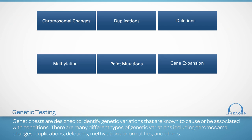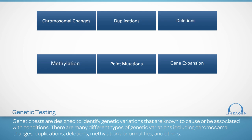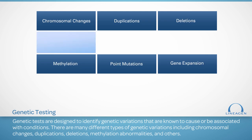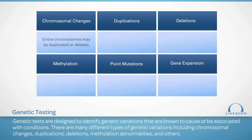There are many different types of genetic variations, including chromosomal changes, duplications, deletions, methylation abnormalities, and others. Chromosomal changes occur when an entire chromosome is duplicated or deleted — in other words, there is an extra chromosome or one is missing.